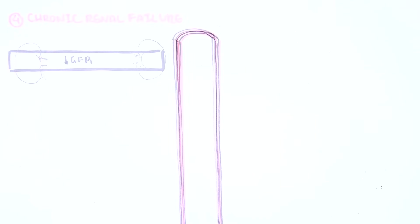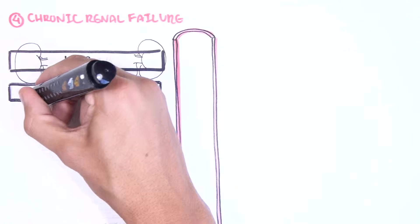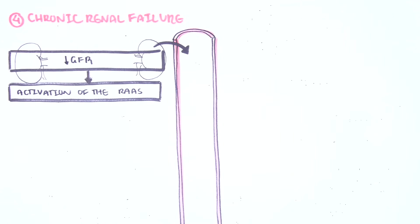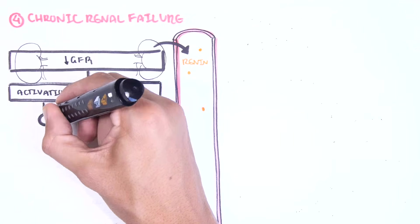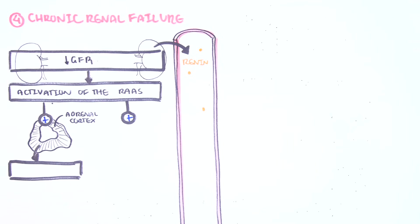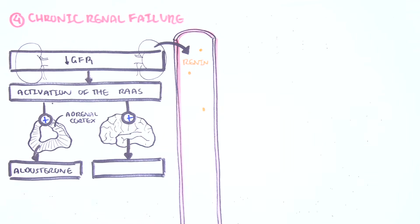Chronic renal failure and hypothyroidism are also causes of hypervolemic hyponatremia. In chronic renal failure, the kidney is unable to filter blood effectively — there is a decrease in the glomerular filtration rate. Reduced perfusion to the kidneys activates the renin-angiotensin-aldosterone system (RAAS) in order to increase the glomerular filtration rate. RAAS results in the release of aldosterone from the adrenal cortex and also stimulation of antidiuretic hormone from the brain.